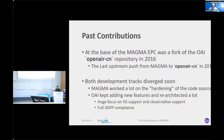Moving forward, both development tracks diverged, with MAGMA working a lot on the robustification and hardening of the code source base. OAI kept on adding new features to cater to the needs of 5G, and also to make sure that we are on the path to cloud-native support with full 3GPP compliance in our code.